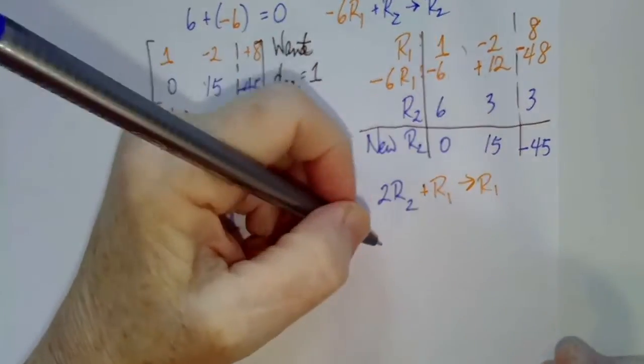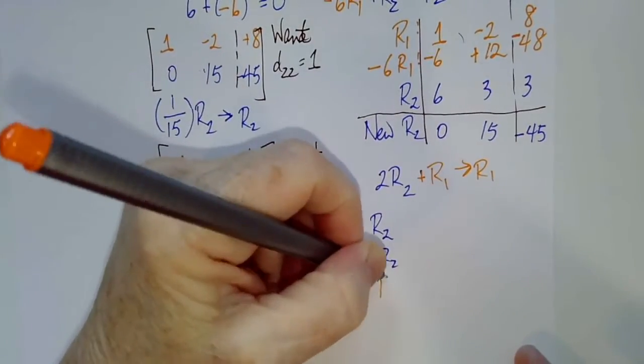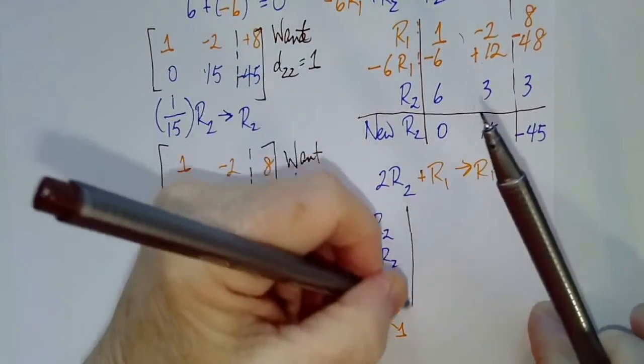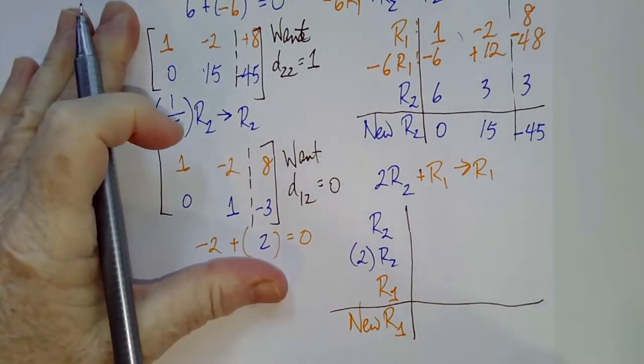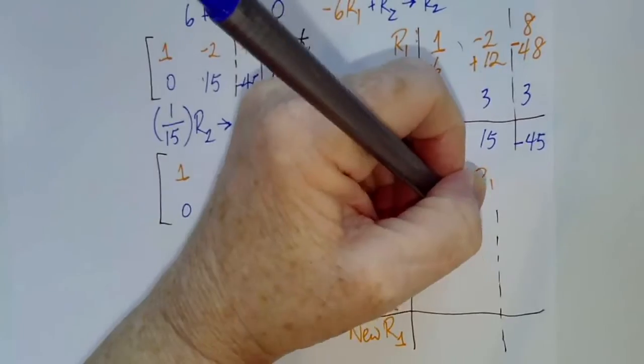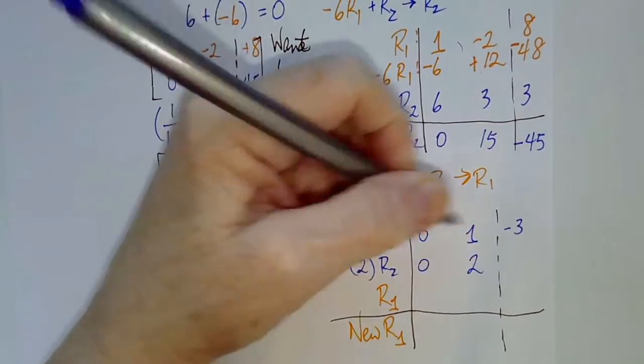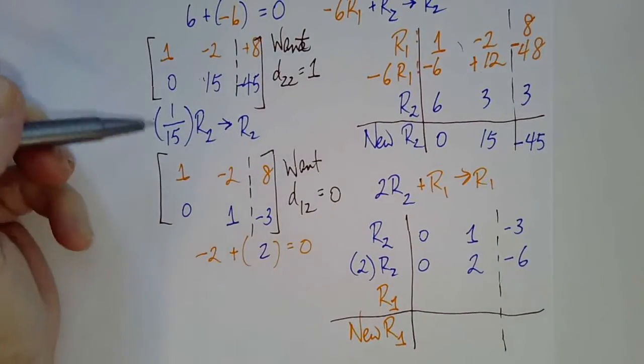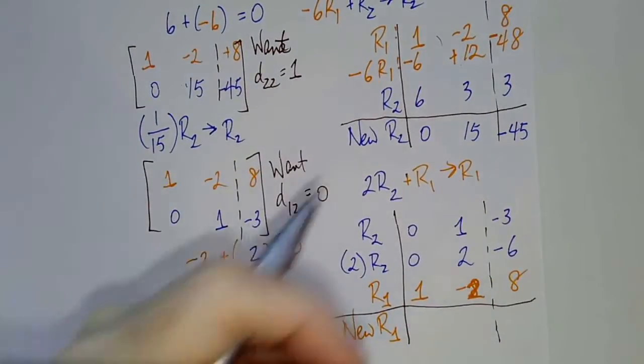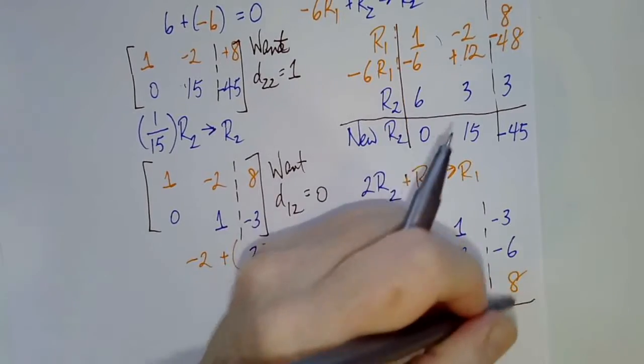So we start with row 2. Row 2 is 0, 1, negative 3. 2 times that: 2 times 0 is 0, 2 times 1 is 2, and 2 times negative 3 is negative 6. Row 1 is 1, negative 2, 8. And now we can add: 0 plus 1 is 1, 2 minus 2 is 0, negative 6 plus 8 is 2.